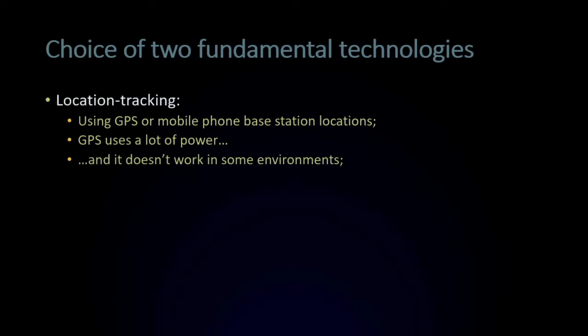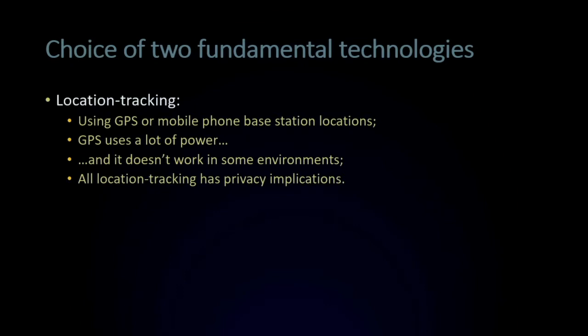GPS gets all the attention. However, if you've ever used GPS and forgotten your charger cable, you quickly realize it draws the battery down very quickly, so it isn't good for long duration tracking. It also doesn't work in many places — it's great in the open countryside but not so great downtown surrounded by skyscrapers or where there are many trees. GPS has been used in Israel for COVID tracking, though the Israeli authorities have admitted it isn't very precise in urban areas. And all location tracking has privacy implications, because you know where someone is at a particular time.